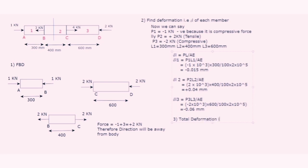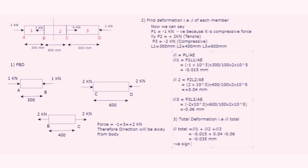Step three: find the total deformation by adding all the deformations. Delta L total = delta L1 + delta L2 + delta L3. Adding all values gives our total deformation of −0.035 mm. The minus sign indicates a decrease in length, because the compressive force is overcoming the tensile force, resulting in shortening.